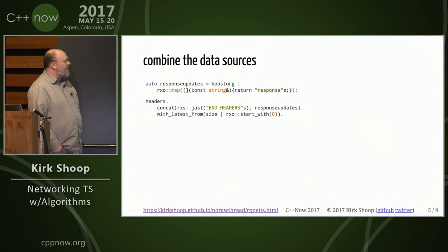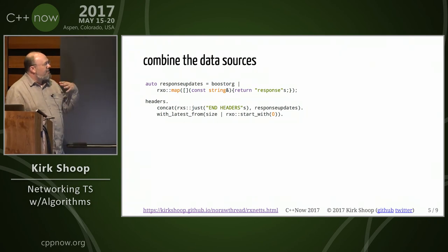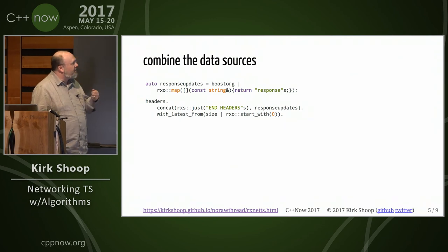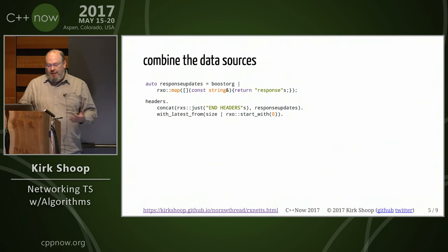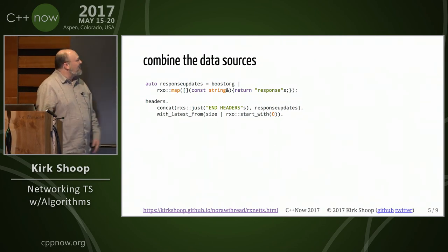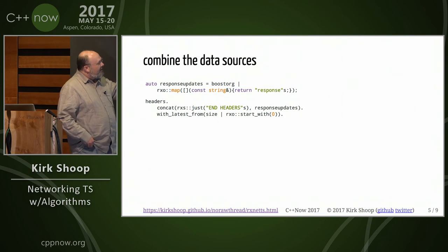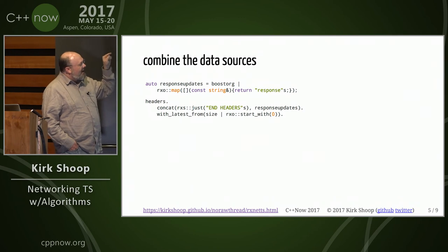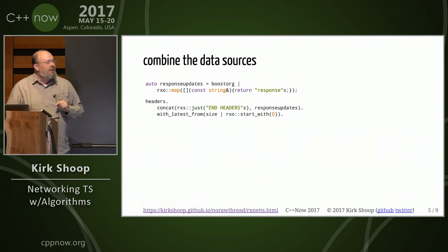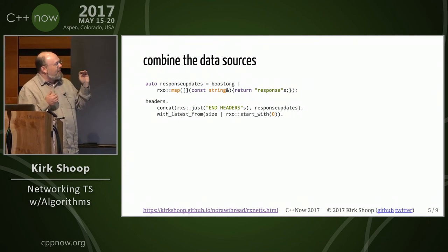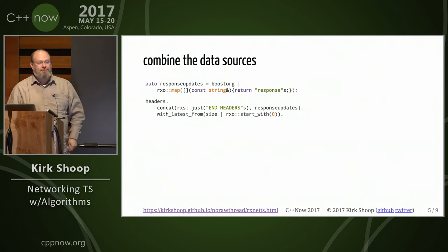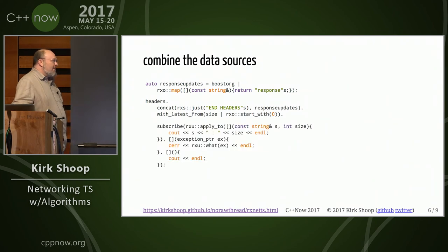So I can take those things and combine them. This third stream, response updates, takes all of the chunks coming in as I read them, and I replace the string of the actual data with the string 'response' so that I don't overflow my console. Now I can take the headers, and after the headers finish I produce end headers, and after that finishes I produce the response updates. And from that stream, every time something is emitted, I can take the most recent size calculation starting with zero.